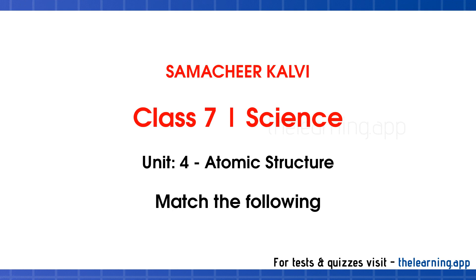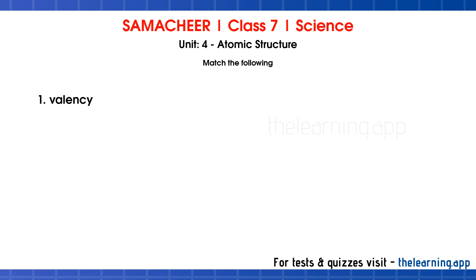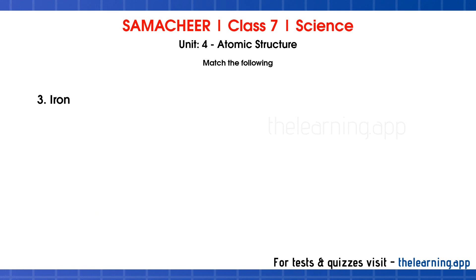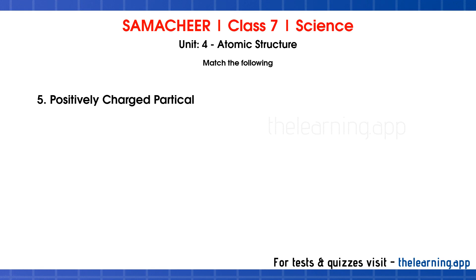Match the following. Question 1: Valency — correct answer is electrons in the outermost orbit. Question 2: Neutral particle — correct answer is neutron. Question 3: Ion — correct answer is Fe. Question 4: Hydrogen — correct answer is monovalent. Question 5: Positively charged particle — correct answer is proton.